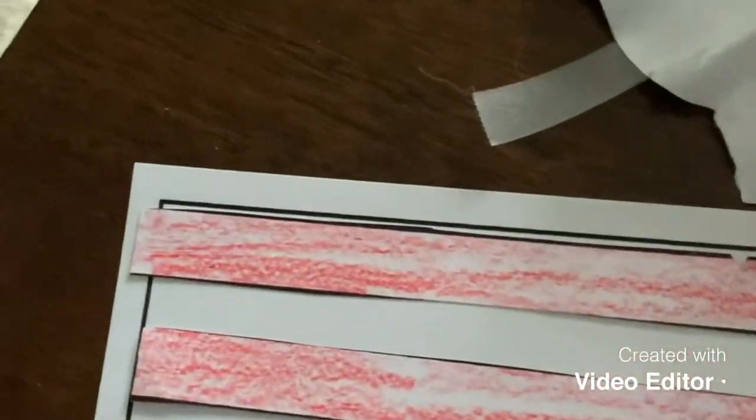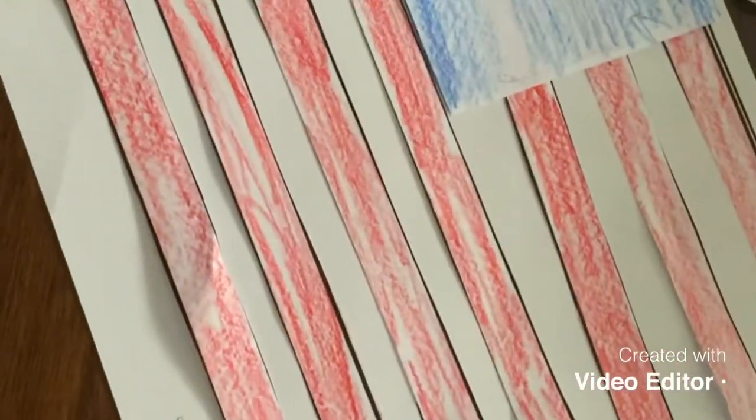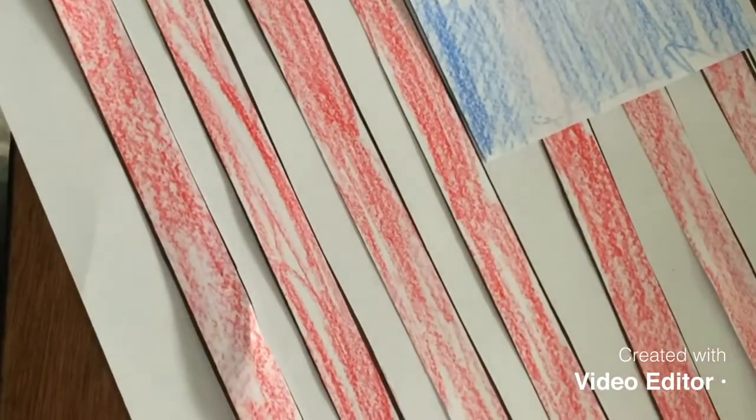Then you are going to take the blue rectangle and glue it on top in the corner. So this is what it'll look like. You're going to glue all of that down.